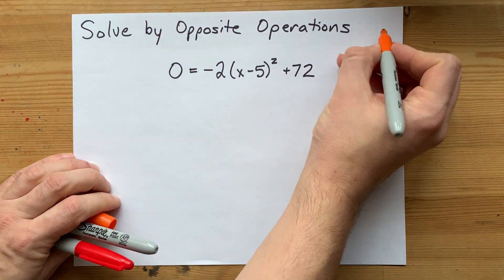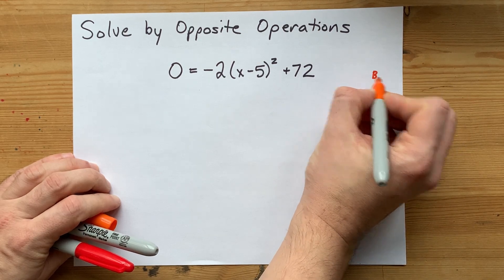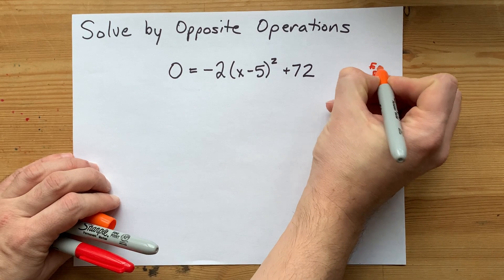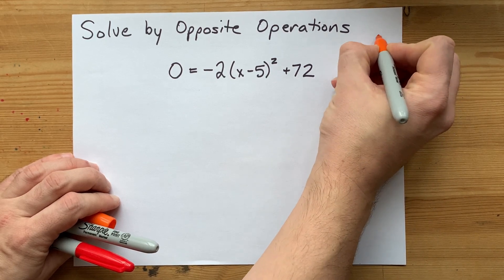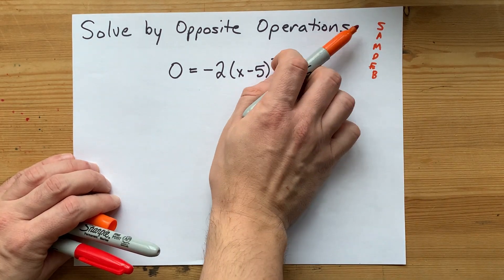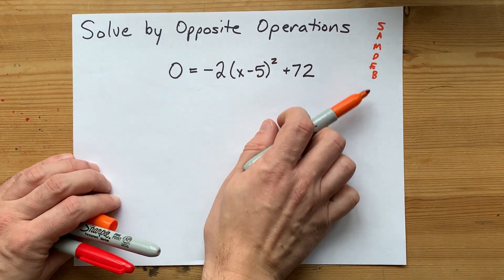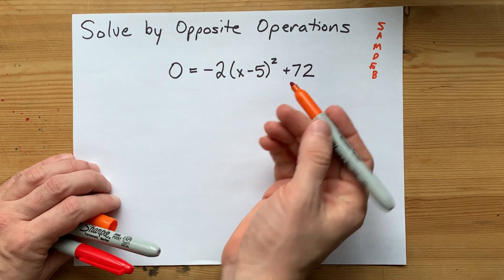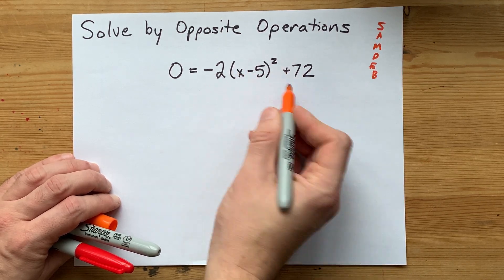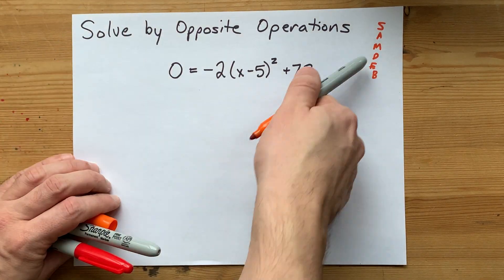They call it opposite operations because you're used to BEDMAS or PEDMAS, which is brackets or parentheses, exponents, division, multiplication, addition, and subtraction. But opposite operations are when you do the opposite of BEDMAS because you're eating your way into an equation instead of being given a value of x and solving forward. So it's in reverse.